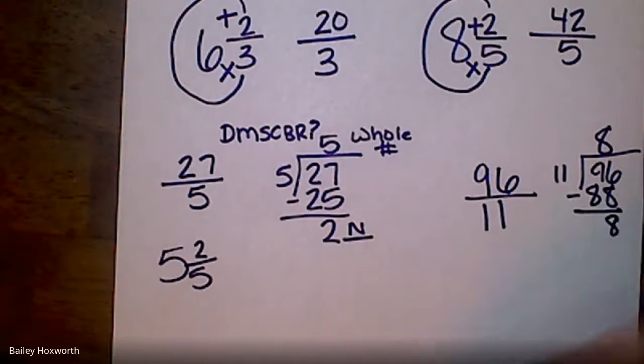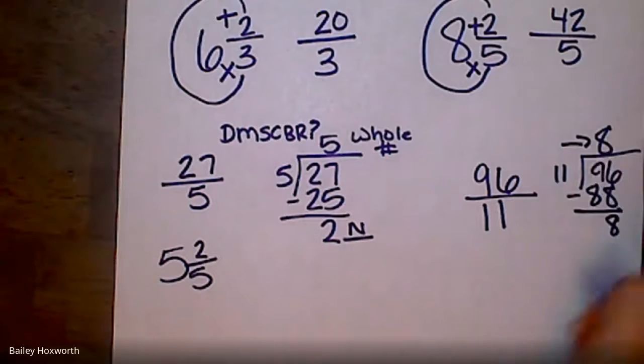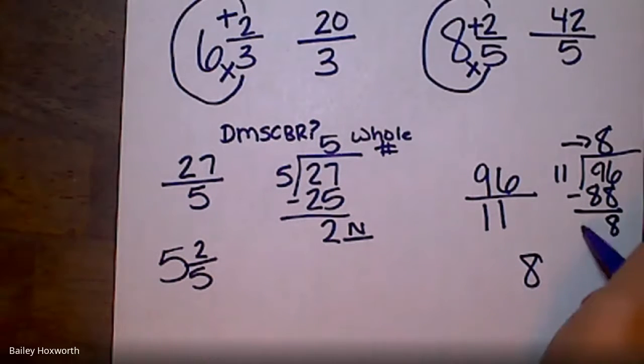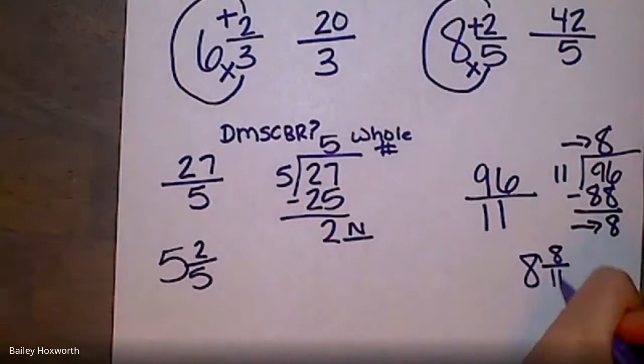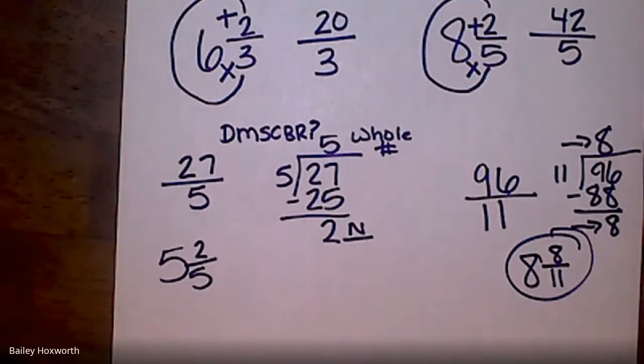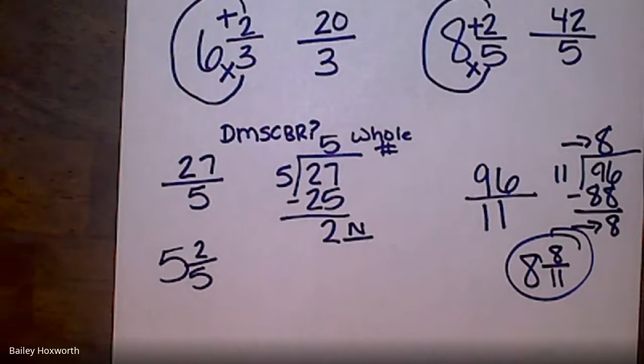Left with 8. So whole number, what is your answer? Your whole number is 8. What is your remainder? 8. That's your new numerator, and the denominator always stays the same. Okay, 11. So 8 and 8/11 would be your answer to turning 96/11 into a mixed number.